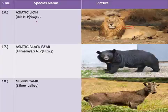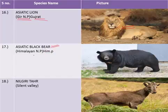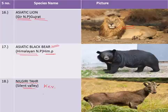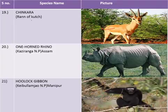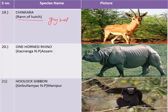The Asiatic lion is the key species of Gir National Park in Gujarat. The Asiatic black bear is native to the Great Himalayan National Park in the state of Himachal Pradesh. The Nilgiri Thar is native to Silent Valley National Park in the state of Kerala. The chinkara is a key species of the Rann of Kutch.